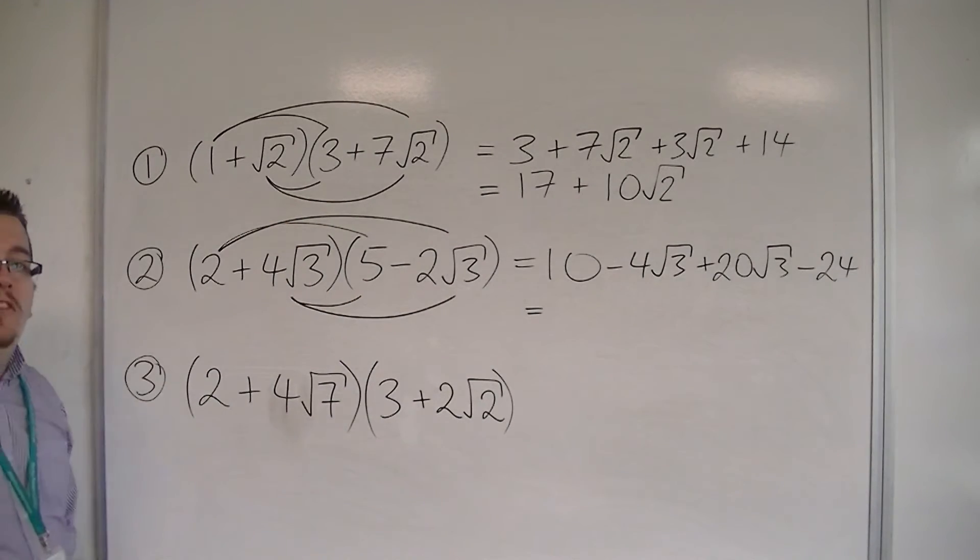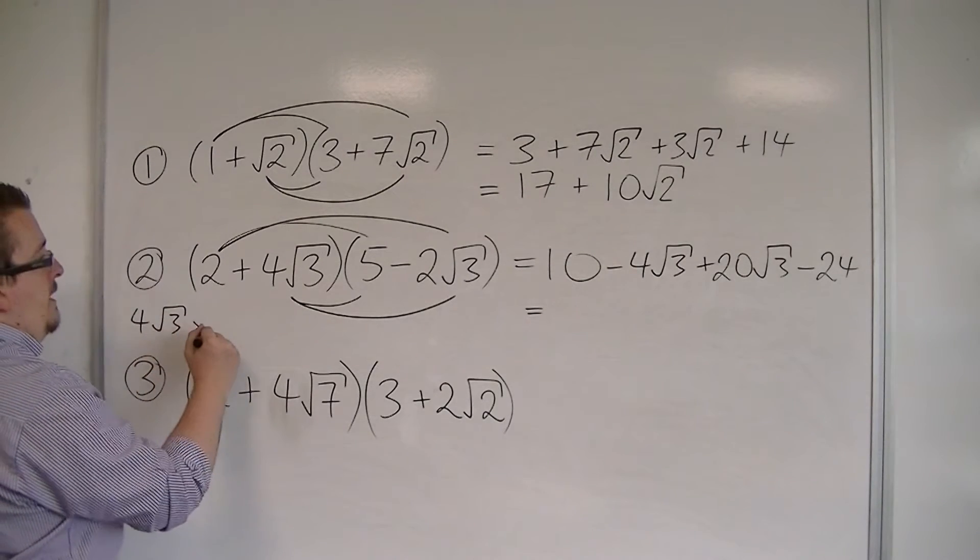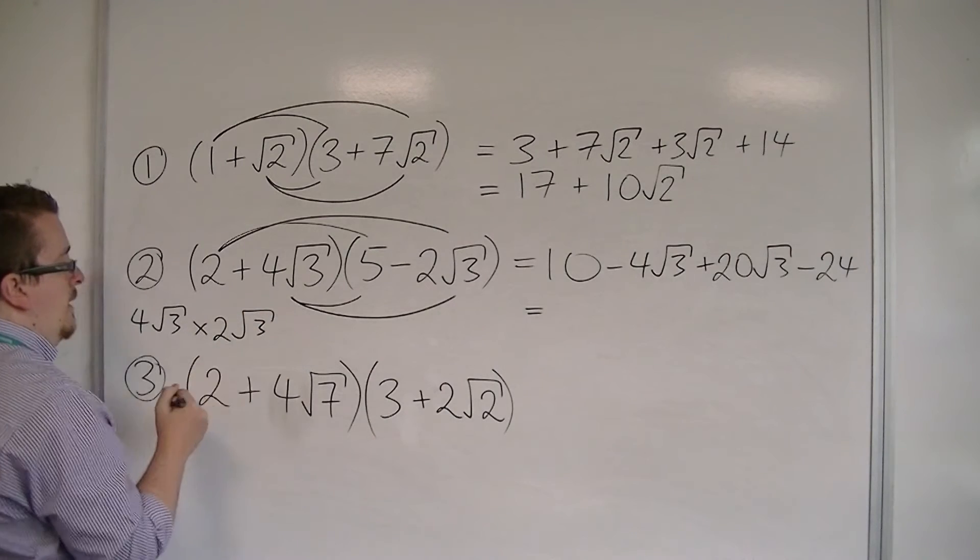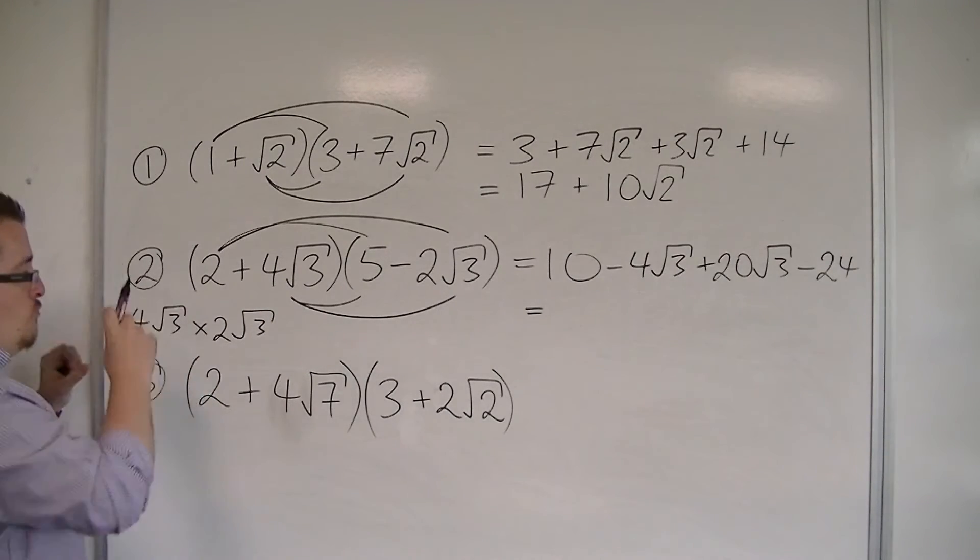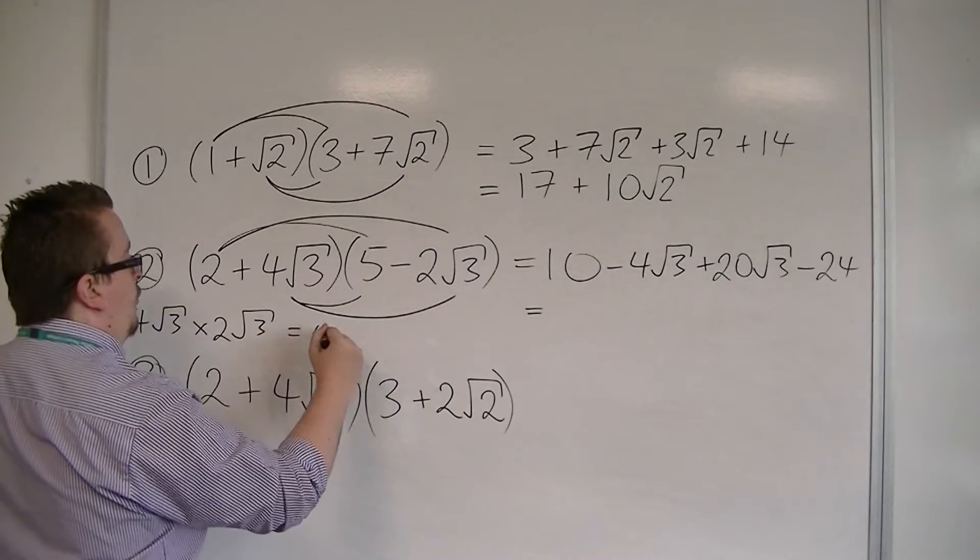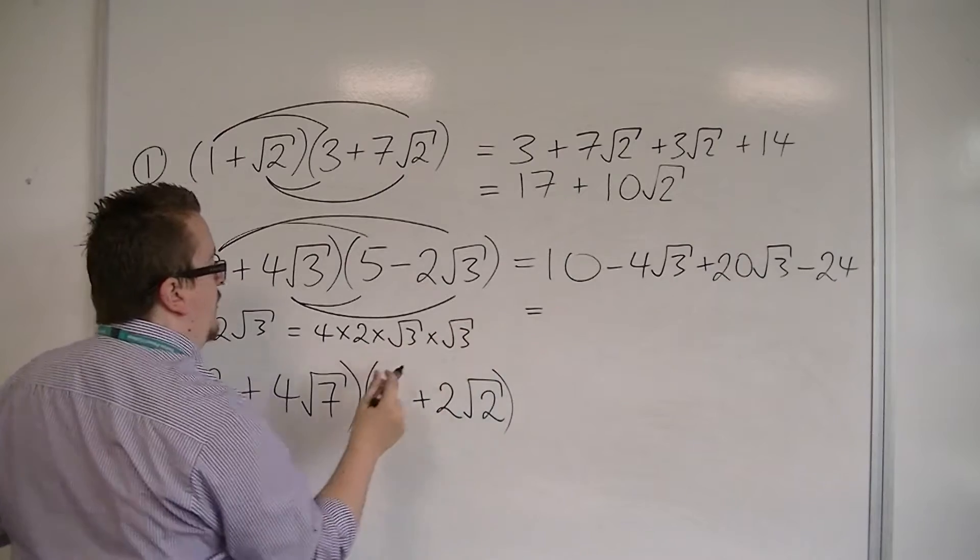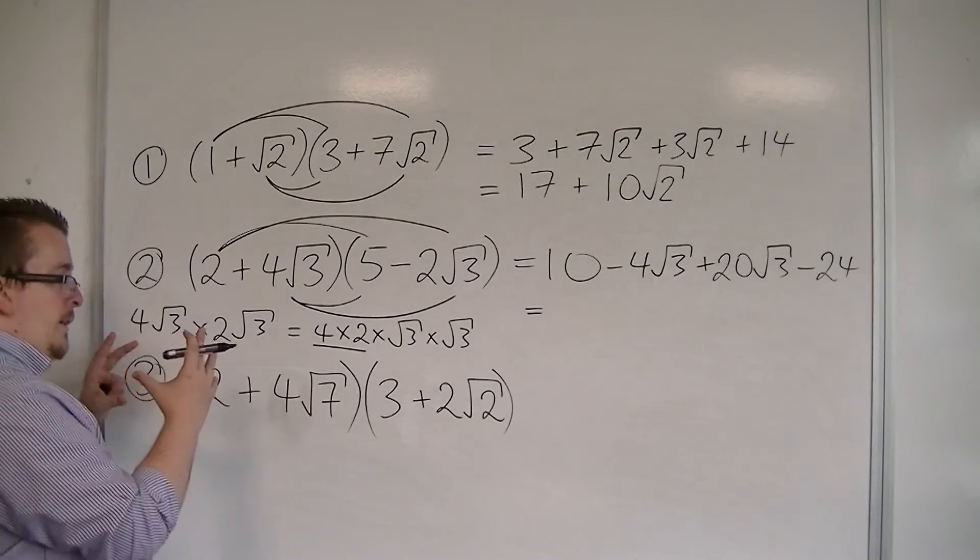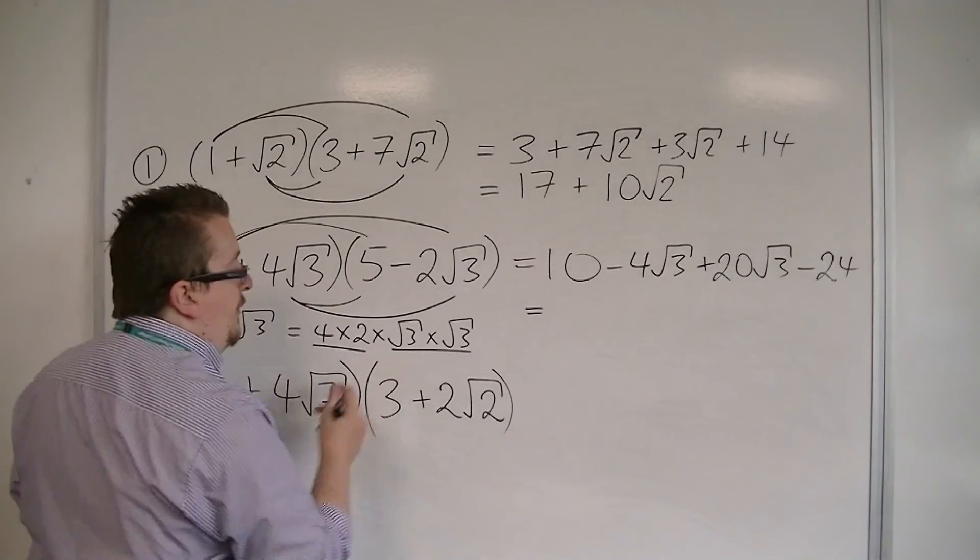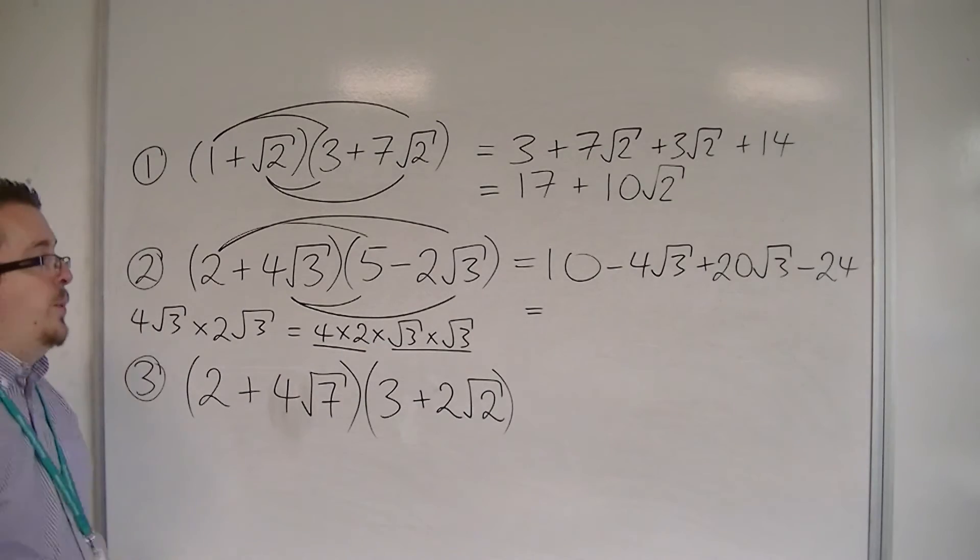If that stage is the most difficult for you, break it down into pieces. Think about 4√3 times 2√3, and then you can split it up or reorder it. So you've got 4 times 2 times √3 times √3, so you're dealing with the integers or the coefficients of the surds by themselves. And then you've got the surds alone. So you've got 8 times 3, which makes the 24.